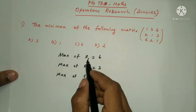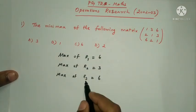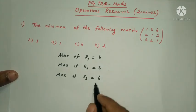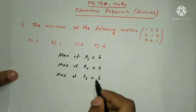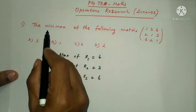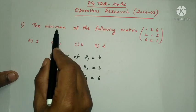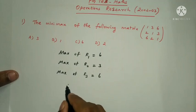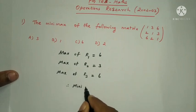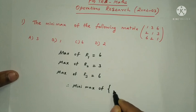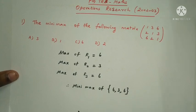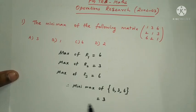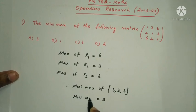Next, find the minimum of the row maxima: minimum of {6, 3, 6}. The minimum of these values is 3. Therefore, the minimax value is 3.